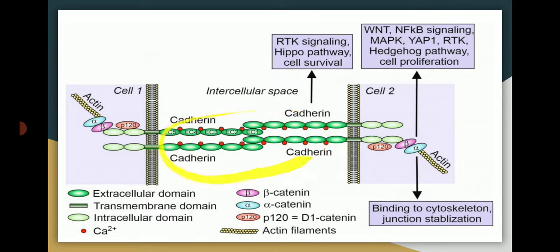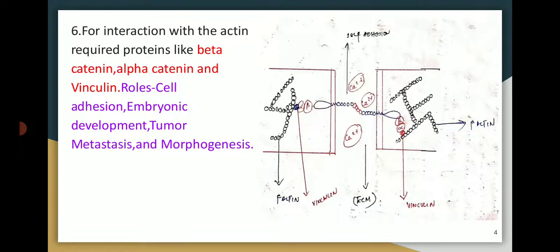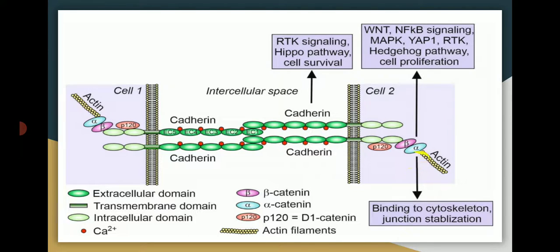The cadherin extracellular components join with Ca2+ ions. The intracellular components are denoted with alpha, beta, and P120. For interaction with actin, required proteins include beta-catenin, alpha-catenin, and vinculin. The intracellular component of cadherin requires first association with beta-catenin and then further association with alpha-catenin.